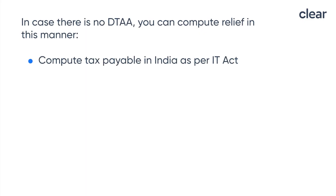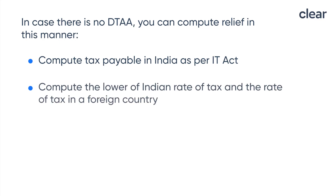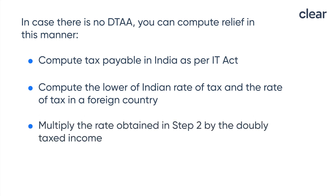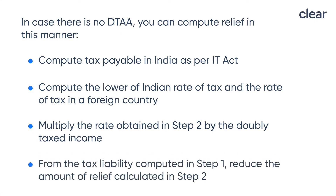If there is no DTAA, tax relief can be claimed under Section 91 of the Income Tax Act. First, compute tax payable in India as per the Act. Then compute the Indian tax rate and compare it with the average tax rate in the foreign country, and check which rate is lower. Multiply the lower rate obtained by the doubly taxed foreign income, then reduce this amount of relief from the tax liability computed in the first step.